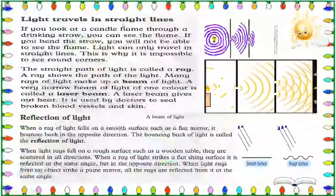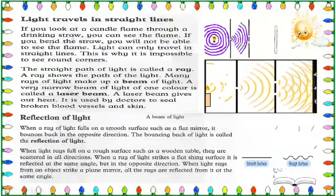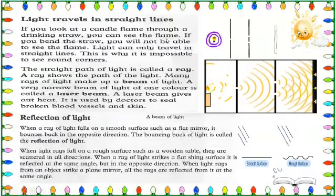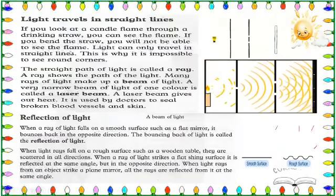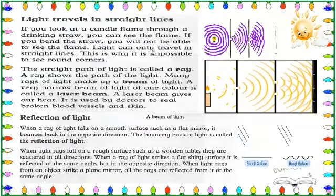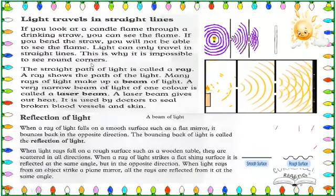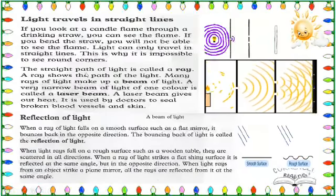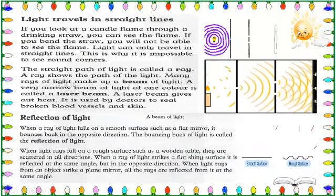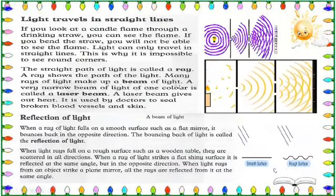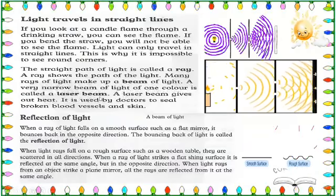Light travels in straight lines. If you look at a candle flame through a drinking straw you can see the flame, but if you bend the straw you will not be able to see the flame. Light can only travel in straight lines — this is why it is impossible to see around corners. The straight path of light is called a ray. Many rays of light make up a beam of light. A very narrow beam of light of one color is called a laser beam.